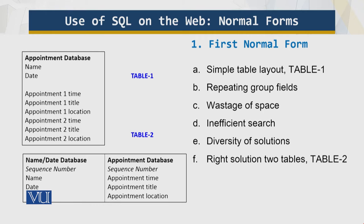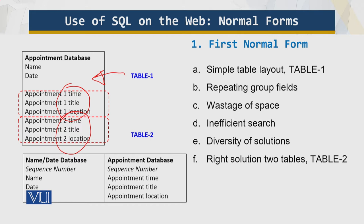First Normal Form. Look at this simple table layout. This is a doctor's database where people come for appointments based on time, location, and title — the doctor has different clinics at different locations, and the title indicates the kind of treatment. What is evident from Table 1 is that there are repeating groups, causing a lot of wastage of space. This is one reason we need the First Normal Form.